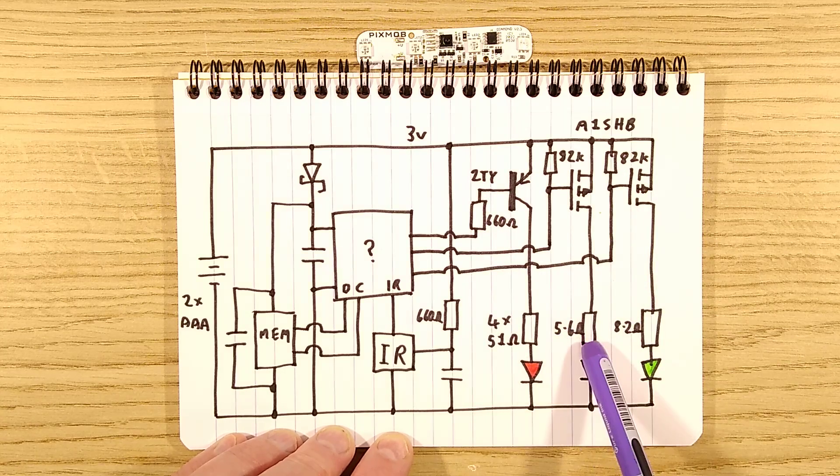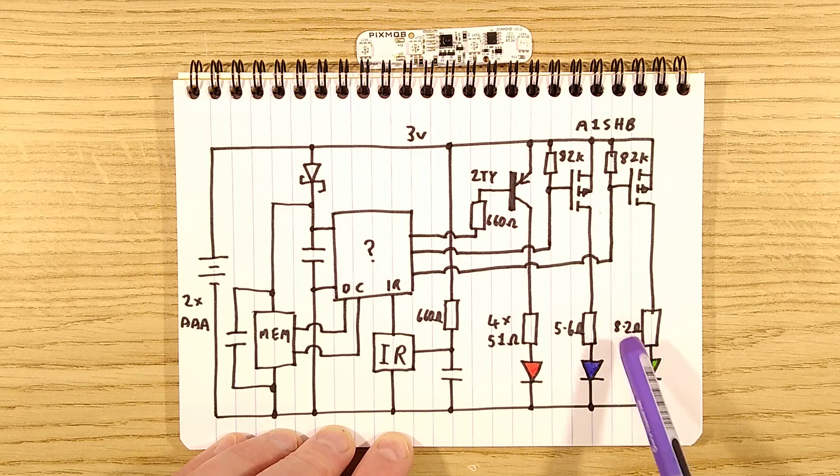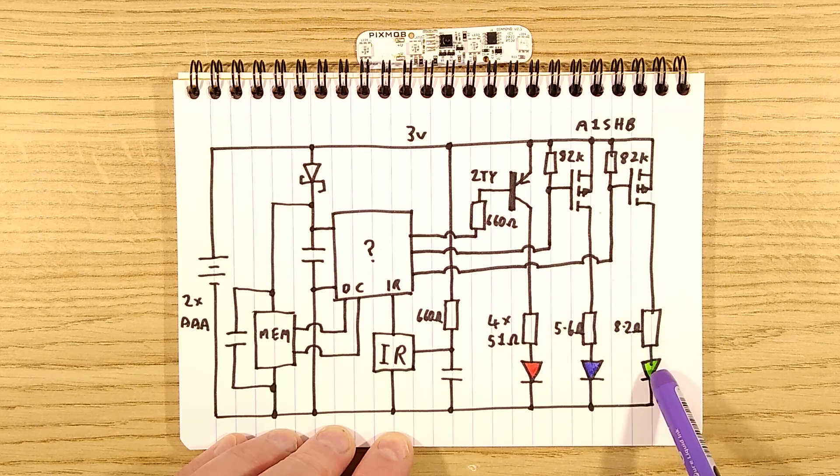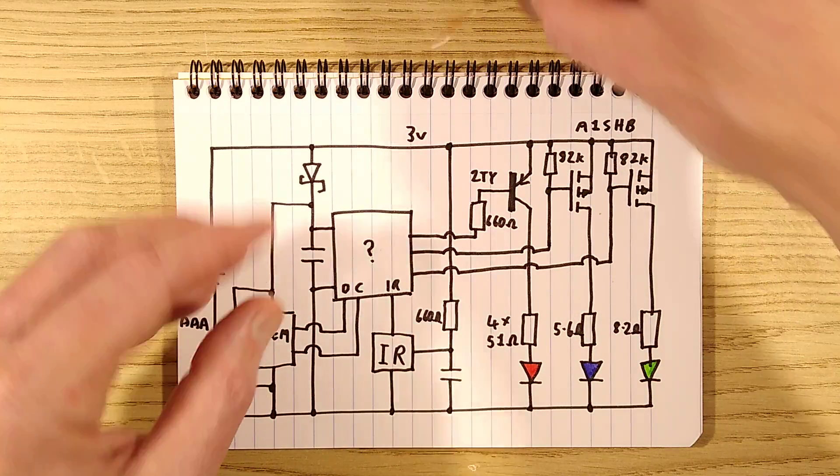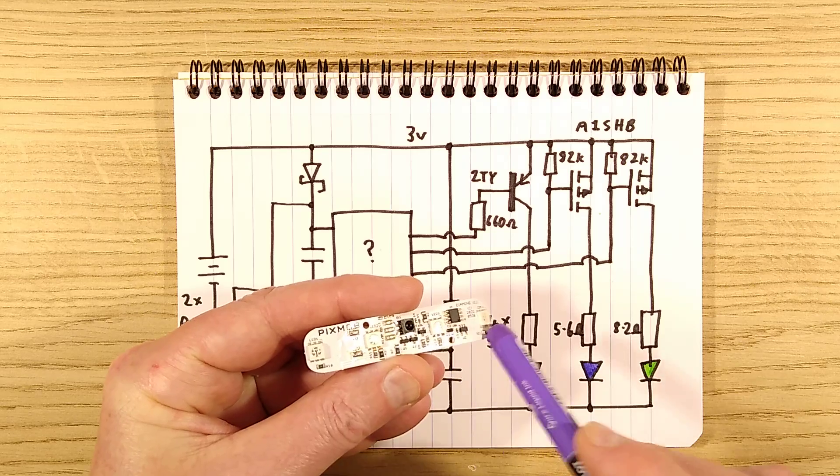And then, oddly, there's just one 5.6 ohm resistor for the blues, one 8.2 ohm resistor for all the greens, and there's four of those LEDs. One, two, three, four.